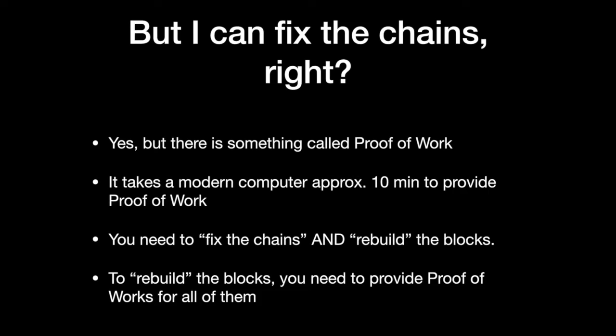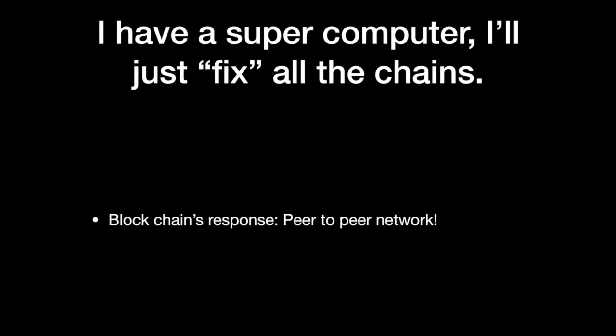So imagine a blockchain with 100 blocks, and you tamper with the 50th one for example. Then you'll need to change data in the following 50 blocks after the block that you changed, which would take 50 times 10, a total of 500 minutes. Okay still, that's not too hard. If I have a lot of money and buy a bunch of supercomputers to calculate the proofs of work for me, I can still easily change data in a blockchain.